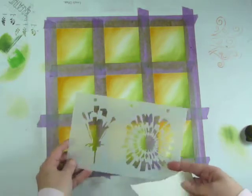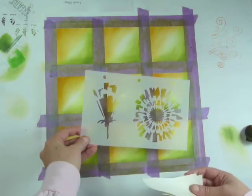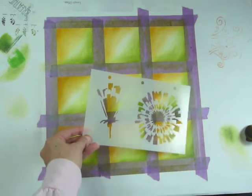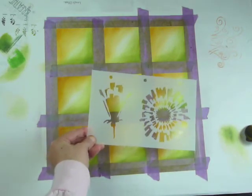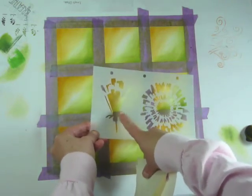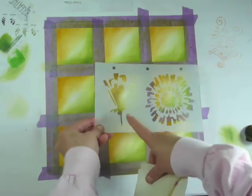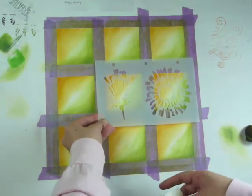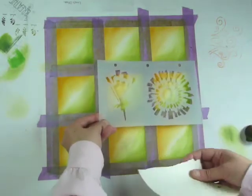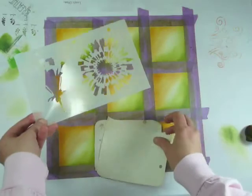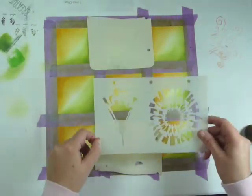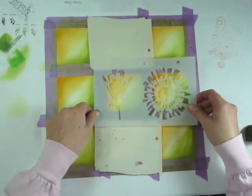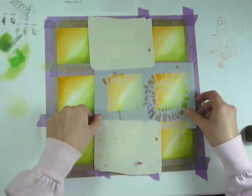I'm going to start by using this stencil from Club Scrap. It's got these dandelion images, which I think are really perfect with the gold and green color scheme I'm going with here. I'm going to start with this one, and in order to start with this one in the center square, I'm going to want to make sure I don't go into any of the other squares around it, so I'm just going to lay some scrap pieces of paper on the top and bottom there, and that'll help protect my work surface.